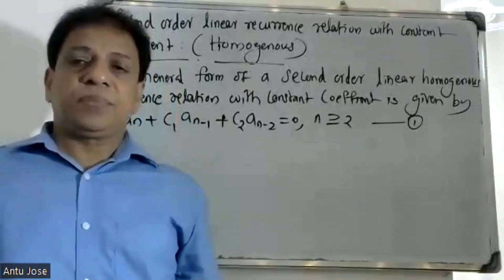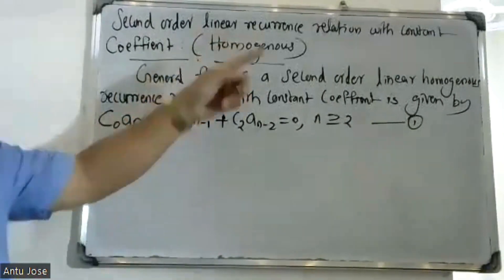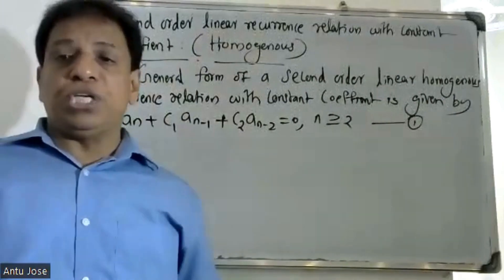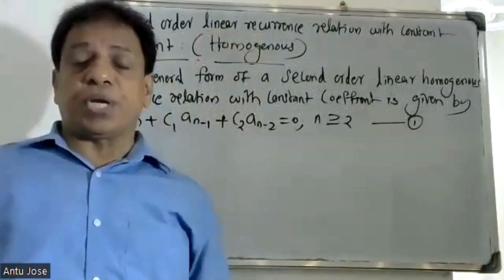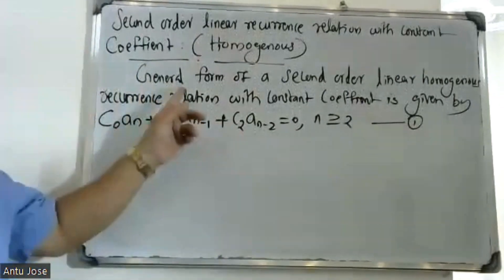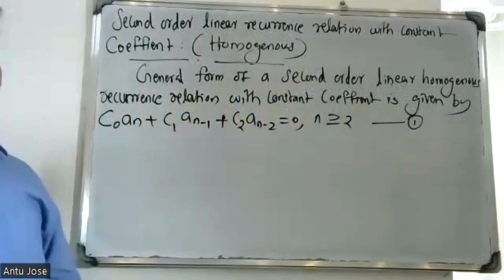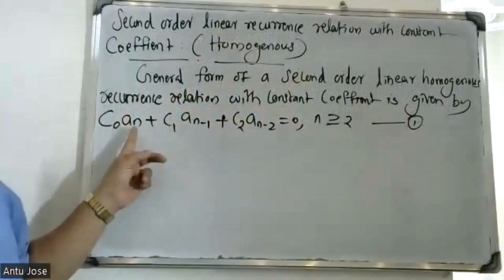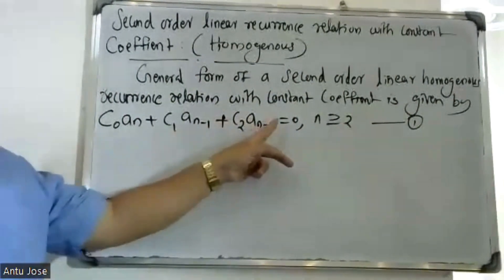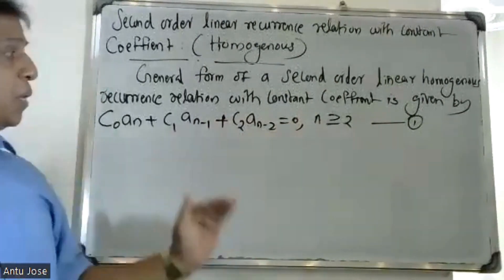Good morning students. Second order linear recurrence relation with constant coefficients — homogeneous. The general form of a second order linear homogeneous recurrence relation with constant coefficients is given by: c₀·aₙ + c₁·aₙ₋₁ + c₂·aₙ₋₂ = 0, for n greater than or equal to 2. From this general form we need to solve it.